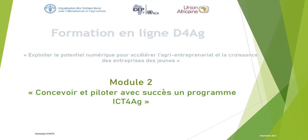Ce second module s'intitule « Concevoir et piloter avec succès un programme ICT pour l'agriculture », un programme de digitalisation. L'objectif de ce module, pour rappel, il faut rappeler qu'on a déjà approfondi dans un premier module le concept de l'agriculture pour comprendre le positionnement et la digitalisation de l'agriculture dans la transformation digitale en Afrique, notamment par le document fourni par les partenaires au cours, qui est la FAO. Nous avons aussi vu la stratégie de digitalisation de l'agriculture développée par la FAO et les statistiques en termes de perspectives pour la digitalisation.